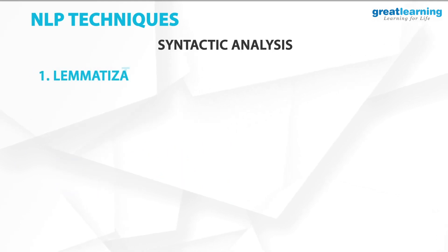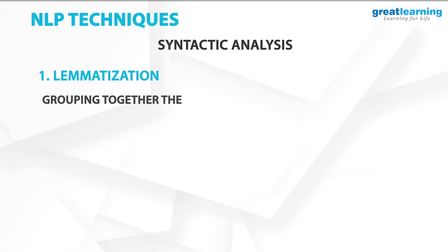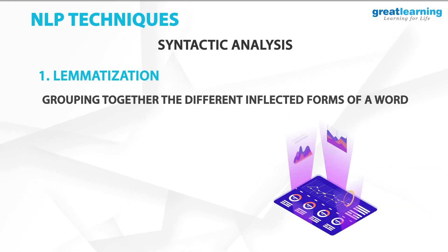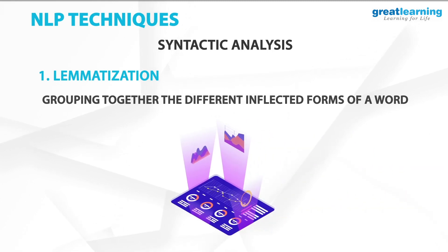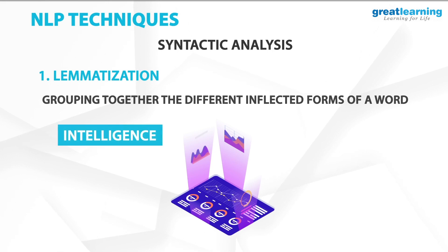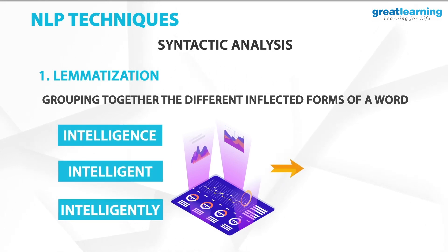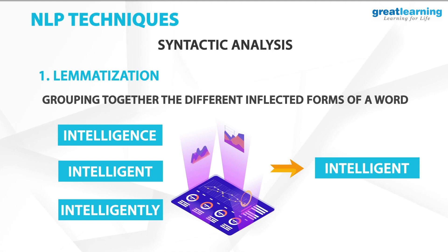The first technique is called lemmatization. Lemmatization is the process of grouping together the different inflected forms of a word so they can be analyzed as a single item. For example, if a machine were to analyze the words intelligence, intelligent, and intelligently, it would derive the root form of these terms as intelligent.